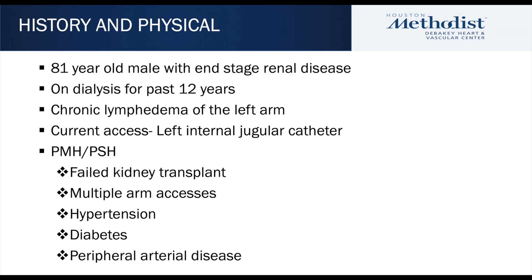Our patient is an 81-year-old gentleman with end-stage renal disease who has been on dialysis for the past 12 years. He has chronic lymphedema of the left upper extremity with multiple bilateral upper extremity accesses. He also has a history of prior kidney transplant that eventually failed, currently being dialyzed through a left internal jugular catheter. Our plan was to re-canalize the right-sided occluded central venous system and place a right internal jugular tunnel dialysis catheter with eventual conversion to a right-sided hero graft.